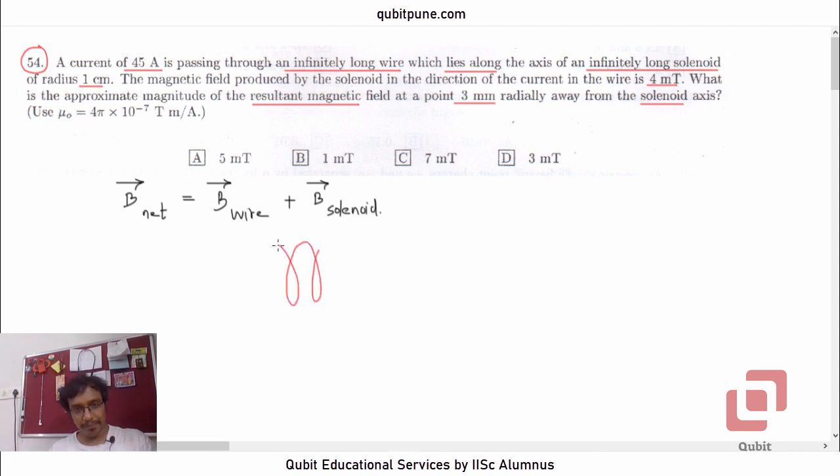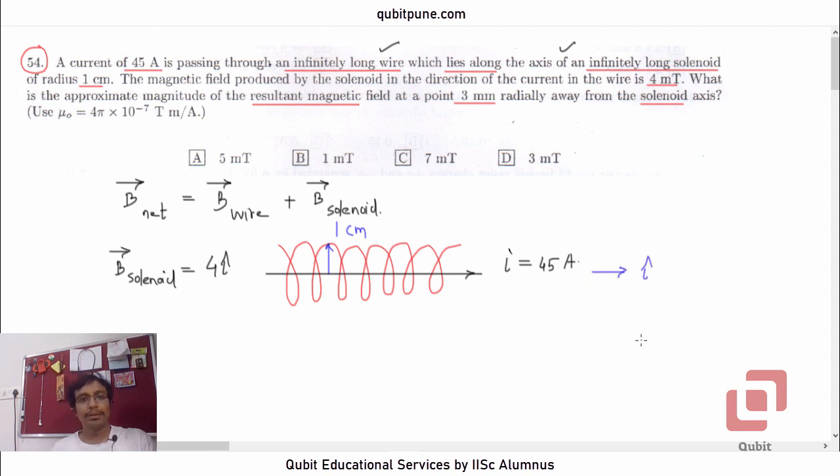Suppose this is our solenoid. Well, it is infinitely long, so let us just show some part of it. And they are saying that the wire lies along the axis of the solenoid. So let us say this is the wire. And through this wire, there is a current I of value 45 amperes. Now, the solenoid radius is 1 cm. So this to this is 1 cm. They are saying magnetic field produced by the solenoid in the direction of the wire, of the current in the wire is 4 mT. So we already know that B solenoid is 4 mT. So let us call it 4 i cap. Let us say this is i cap direction.